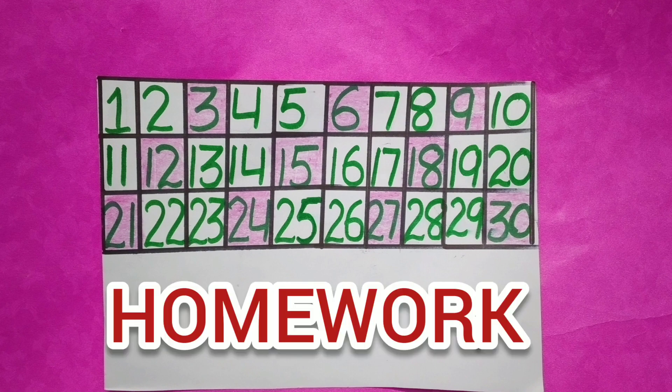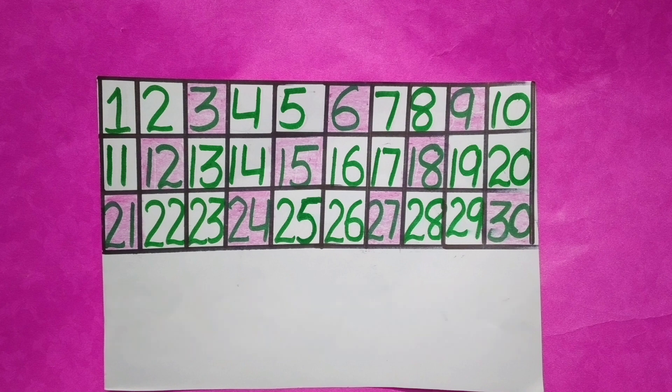Now it's time for homework. Students, write down counting from 1 to 30 in your notebooks and color these boxes by jumping by 3. Thank you, keep learning, bye.